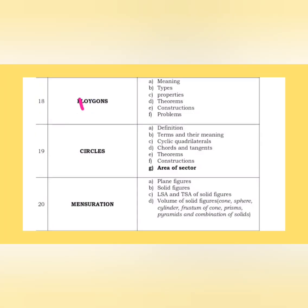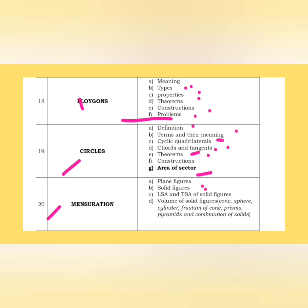Next, polygons: meaning, types, properties, theorems, construction and problems. In circle — very important: definition, terms and meaning, cyclic quadrilaterals, chords and tangents, theorems, constructions and area of sectors. In mensuration: plane and solid figures, LSA, TSA and volume of solid figures — cone, sphere, cylinder, frustum of cone, prisms, pyramid and combination of solids. This entire chapter except combination of solids is already covered for GPSR; I will solve a few more mensuration questions as well.